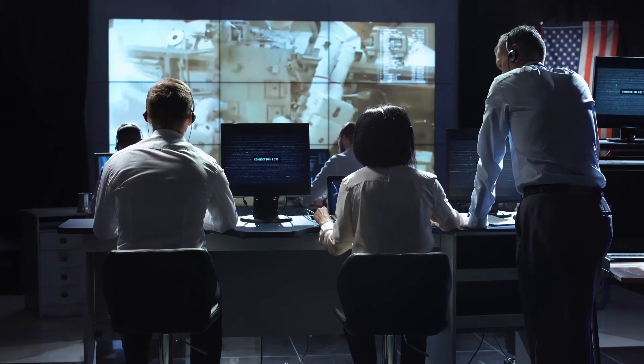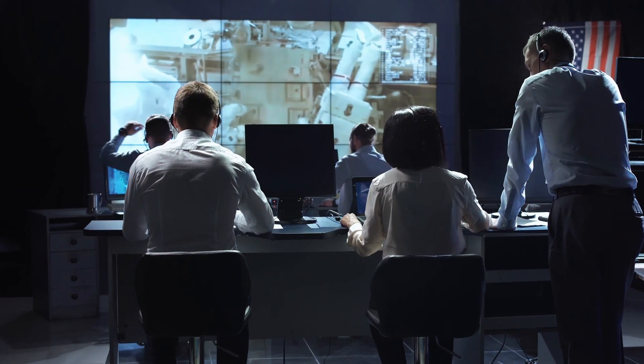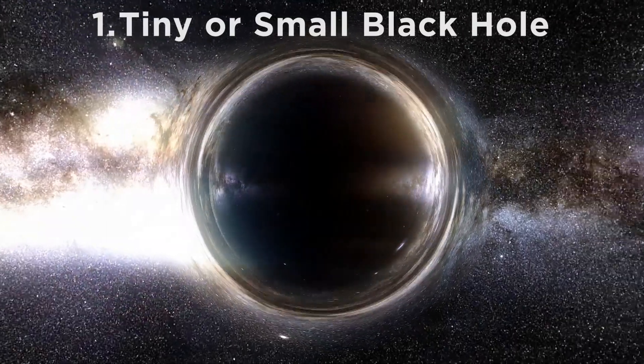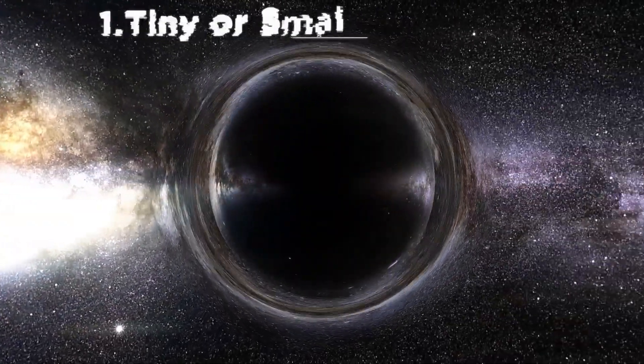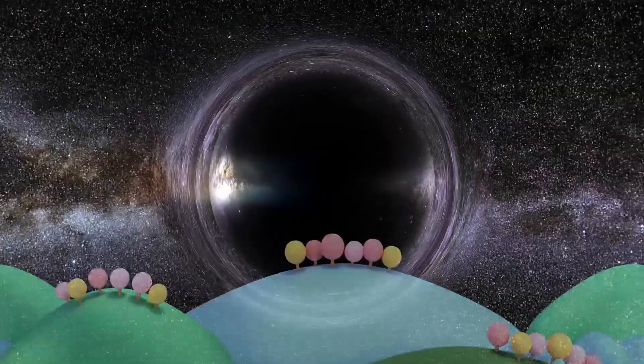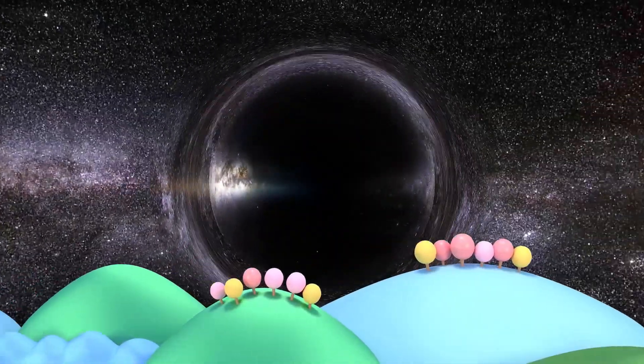According to NASA, black holes are of three types. One, tiny or small black hole. The surprising fact is that even the smallest black hole can be the size of a large mountain on Earth.